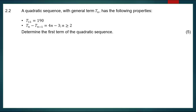This is a continuation — we'll be doing question 2.2. We are told that a quadratic sequence with general term tn has the following properties: the 11th term t11 is equal to 190. The general term for finding the difference between two consecutive terms is 4n minus 3, where n is greater than or equal to 2.